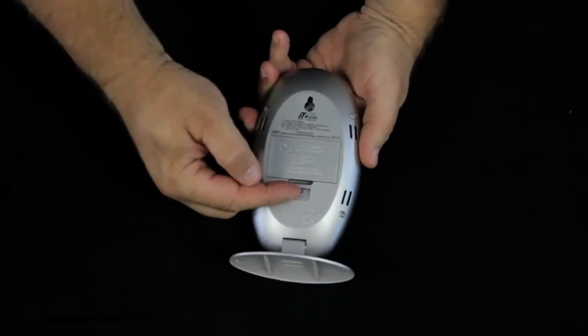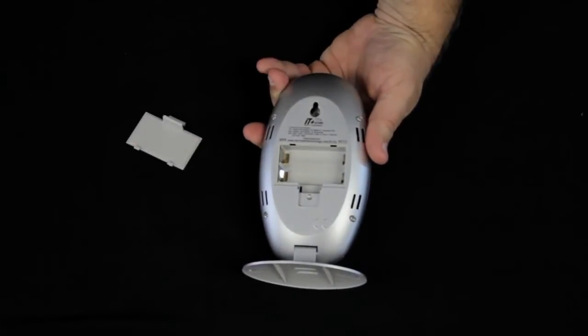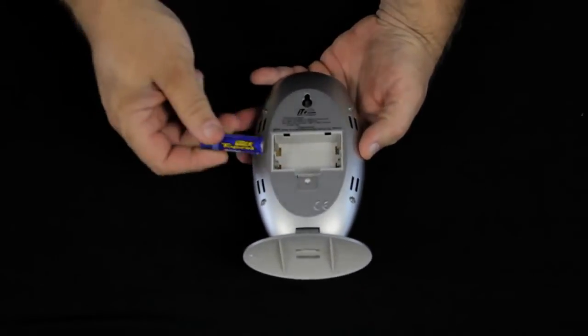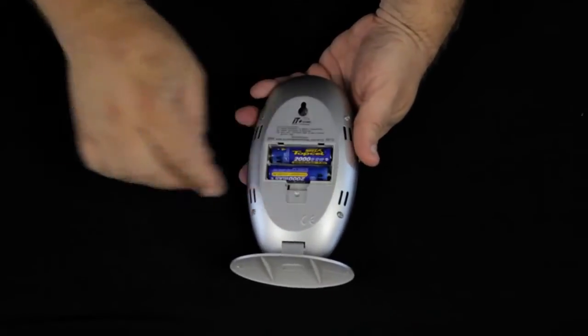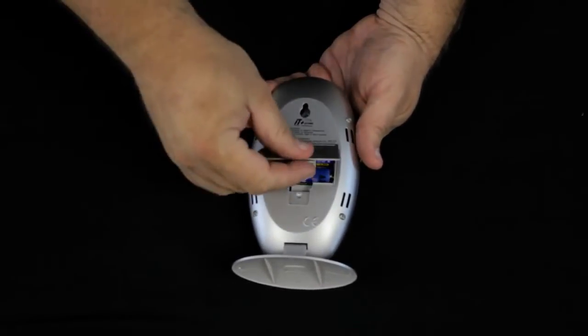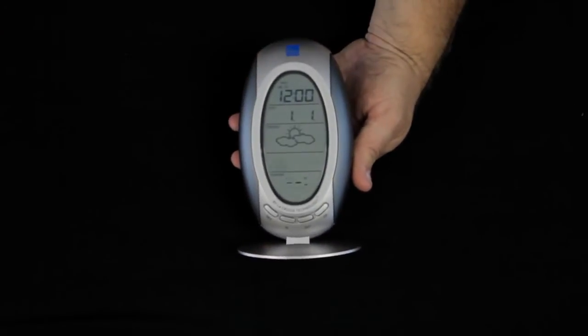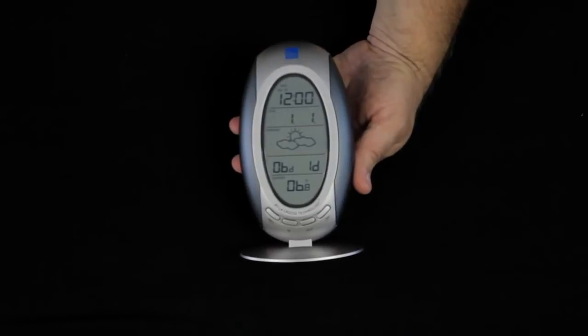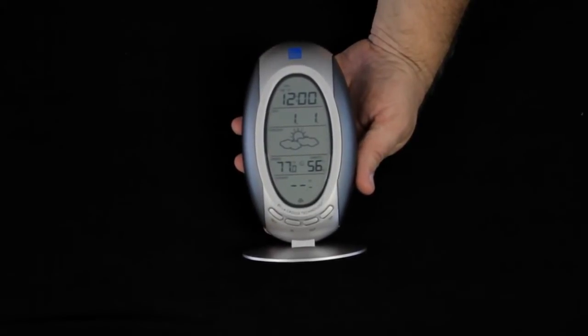For the display, we press the tab up toward the battery door and it rolls up. Again, we're looking at fresh alkaline batteries. We put those batteries in and we'll close that door, and the unit will initially show everything lit up, and then it will show just some basic data packaging and start to go to work.